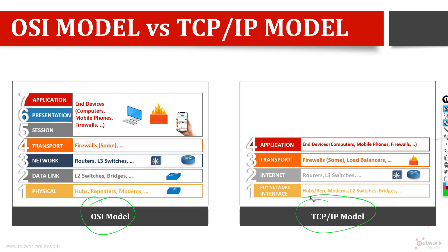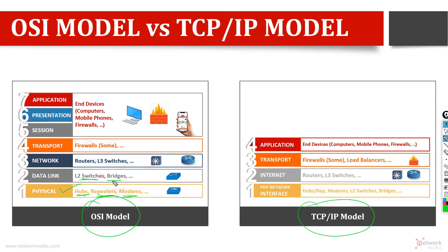There are different devices which belong to each of these two models. For example, hub, repeater, and modems belong to Layer 1 — the physical layer. Switches and bridges belong to Layer 2 — the data link layer in the OSI model. Layer 3, the network layer, covers routers and Layer 3 switches.